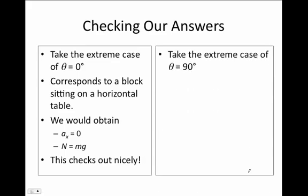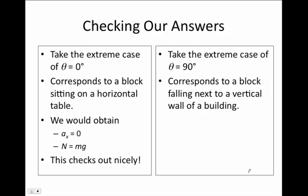The other extreme case we can think about is the case when theta is 90 degrees. In that case, the inclined plane is not an inclined plane so much as it's a block falling down next to the vertical wall of a building. If I plug in 90 degrees into the two expressions, I get A sub X is equal to G. In other words, it's in free fall, and that's about right. That makes sense.